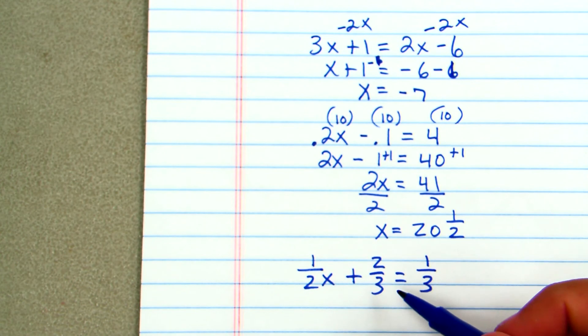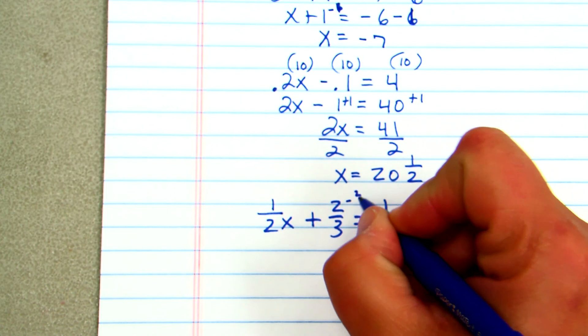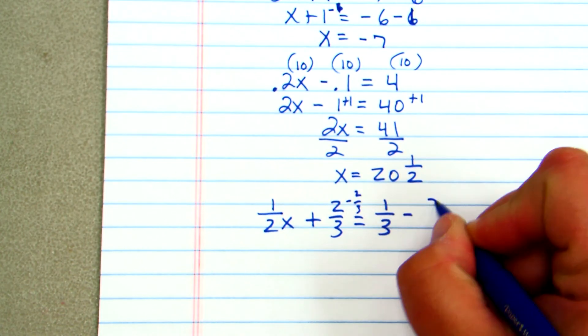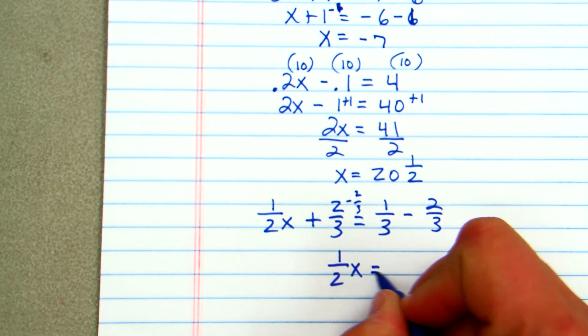Okay, now, my first step on this is going to be to subtract 2 thirds from both sides to move the 2 thirds over. And that'll leave me with 1 half x is equal to...